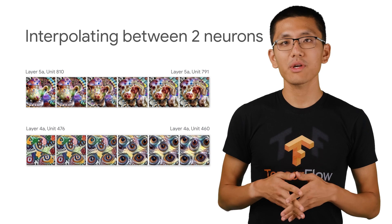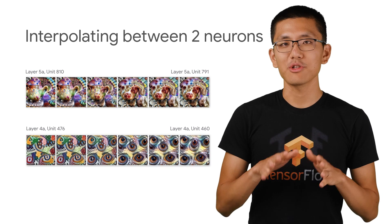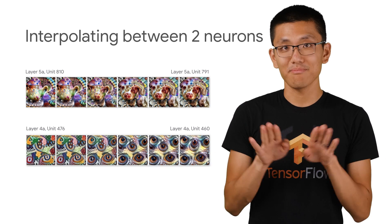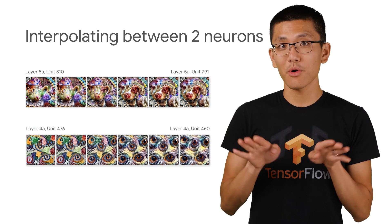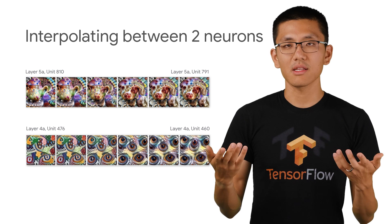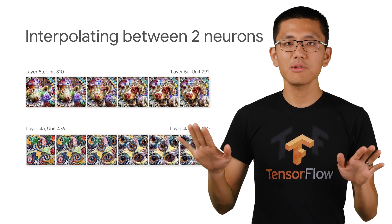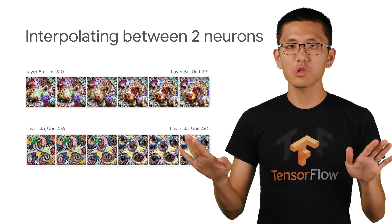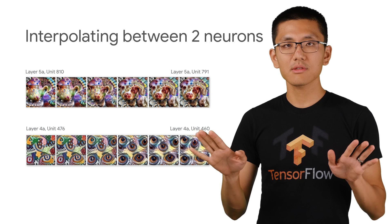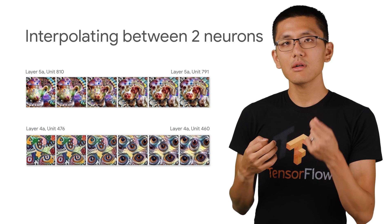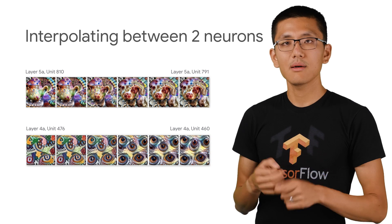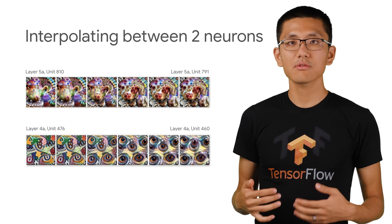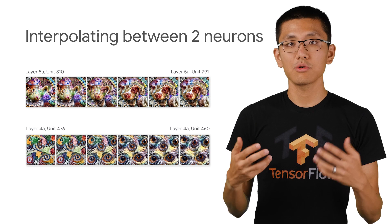And finally, let's see how we can interpolate between two different neurons rather than just optimizing for both equally. We can weigh them unevenly, giving us images that are along the spectrum between the two channels. This gives us even more context about what sorts of patterns these channels are able to detect.